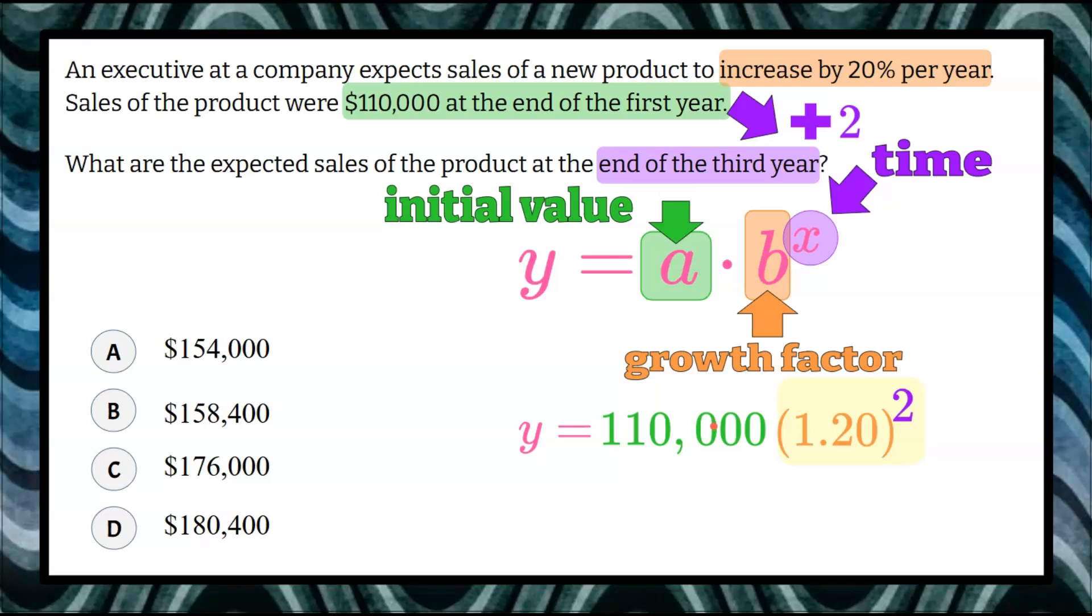Multiply by 110,000 and equals, and you should get the product 158,400, which is answer choice B. The expected sales at the end of the third year would be $158,400.